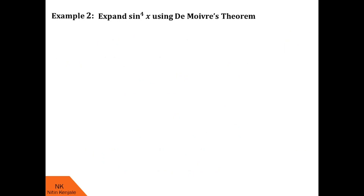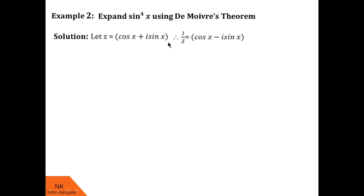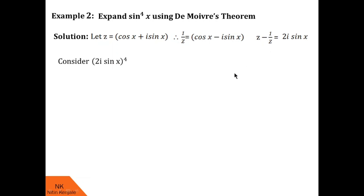Now let us proceed to the next example. Here we are asked to expand sin raised to 4x using De Moivre's theorem. We begin by considering z equal to cos x plus i sin x, so 1 by z is cos x minus i sin x, and z minus 1 by z is 2i sin x. Since we want to expand sin raised to nx, according to step 1 we begin with 2i sin x whole raised to n; here n is 4, so we begin with 2i sin x raised to 4. But 2i sin x is z minus 1 by z, so we replace it with z minus 1 by z raised to 4.